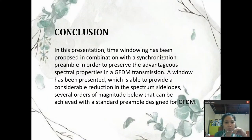For the conclusion, in this presentation, time windowing has been proposed in combination with a synchronization preamble in order to preserve the advantageous spectral properties in a GFDM transmission. A window has been presented which is able to provide considerable reduction in the spectrum side lobes several orders of magnitude below that can be achieved with a standard preamble designed for OFDM. Thank you.